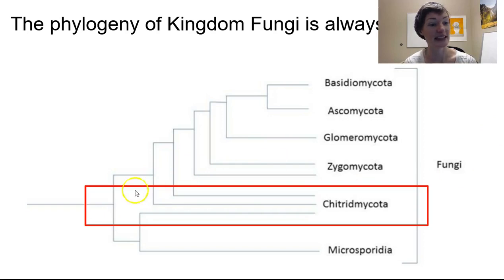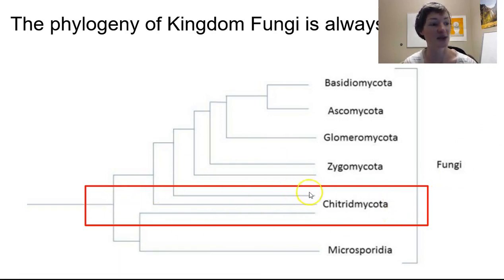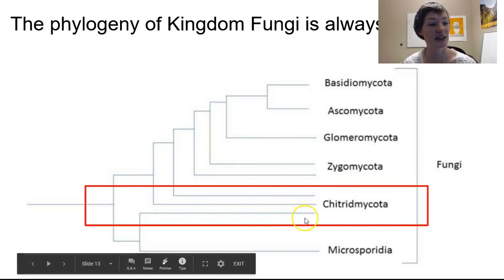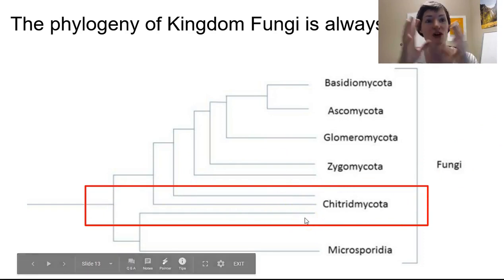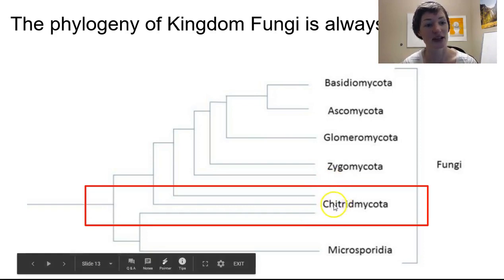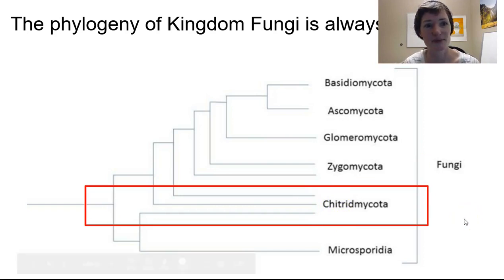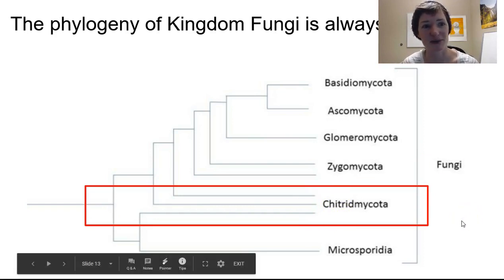Here is where Chytridiomycota sits on this phylogeny. Note that it has multiple different lineages all classified within this umbrella of chytrids. Also, it is spelled differently on this diagram — possibly a British English variant.